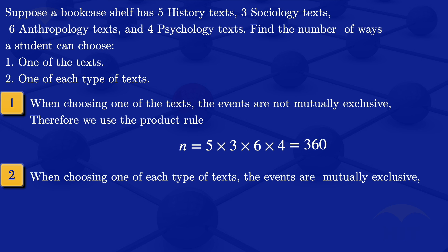Once you choose one, then you are excluding the other ones. And when we have events being mutually exclusive, we use the sum rule. So for the sum rule, we'll be adding those values: the 5, the 3, the 6, and the 4. The number of ways is 5 plus 3 plus 6 plus 4, and that will give us 18.